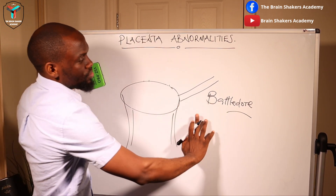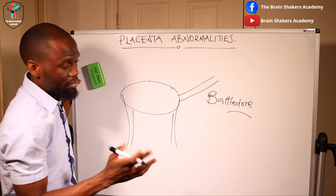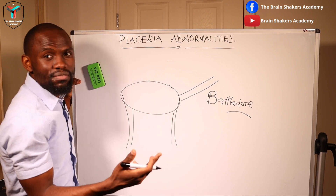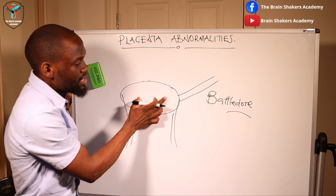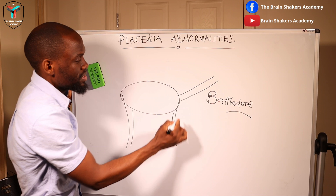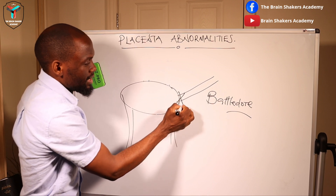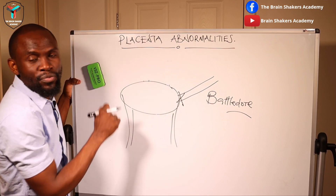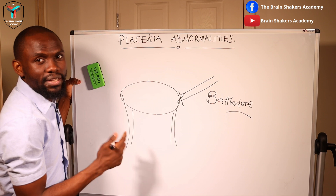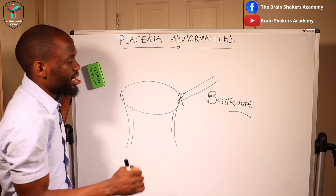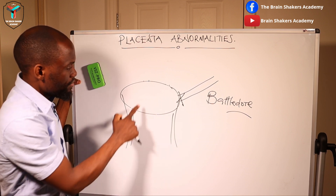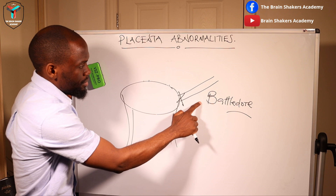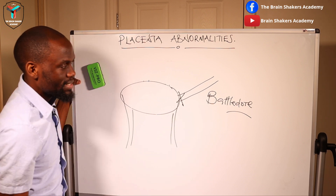There is nothing wrong with having a battledore insertion, but when delivering this placenta the chances of having a retained placenta are high, because the cord can snap at the edge and leave the placenta attached in the uterus, requiring manual removal of that retained placenta.